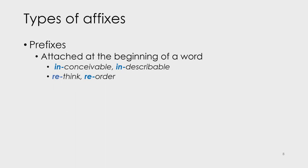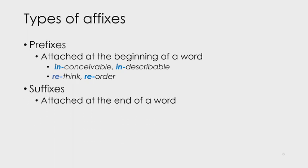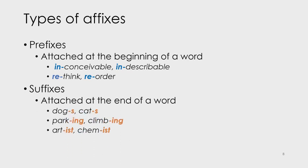Affixes can also be classified according to where they are attached. Affixes attached at the beginning of a word are called prefixes. For example, when in- goes in front of an adjective such as conceivable and describable, it negates those qualities so that you get 'not conceivable' and 'not describable'. Another example is the prefix re-, in the case of rethink, reorder, or redo, to mean to do again, to think again, or to order again. Affixes attached at the end of words are called suffixes, such as the plural -s in cats and dogs, or -ing at the end of park and climb. And when -ist is attached to the nouns art and chem, we derive the words for the people who practice art and chemistry.